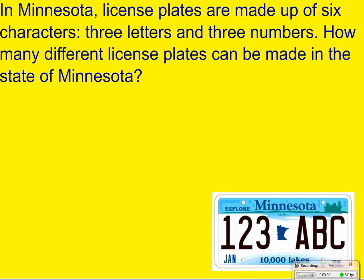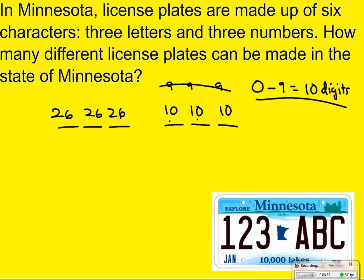So, now, Minnesota license plates are made up of six characters, three letters, three numbers. How many different license plates can be made in the state of Minnesota? So you've got three spots for letters, and you've got three spots for digits. So, you can have repeats. So, you're going to have 26, 26, and 26, and then you're going to have three numbers. Now, here's where everybody gets this screwed up. So, this is actually going to be 10, 10, and 10. A lot of kids will put 9, 9, 9 here, and that's wrong. Here's why. Everyone thinks, well, there's only nine digits that are one digit. Well, you guys forget, 0 to 9 is actually 10 digits. So, it's got to be 10 times 10 times 10.